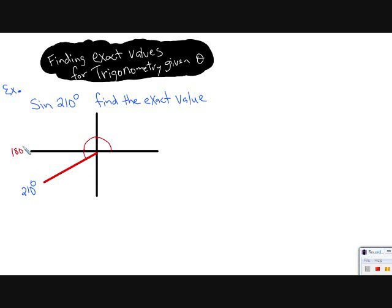When we think about 180 degrees, 180 degrees plus what is 210? That's going to be 30 degrees. So we're going to write that angle as 30 degrees. That is called the reference angle.